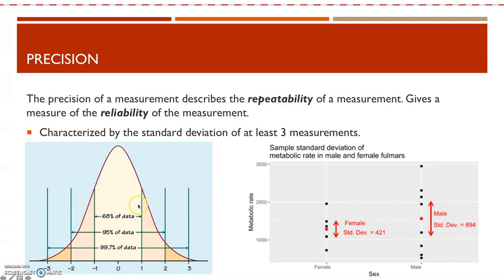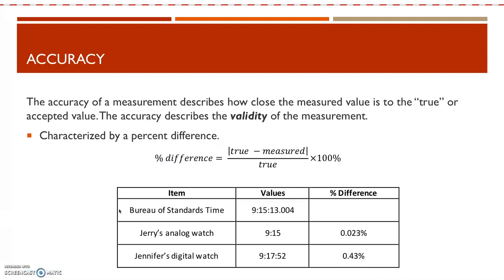The width of the standard deviation tells you about the overall spread in the data points. If you have more spread in your data, you are less reliable and less repeatable, and you'll have a larger standard deviation. If you are very repeatable, you'll have more measurements closer to the average, the distribution becomes more narrow, and your standard deviation gets smaller. Standard deviation is a great way to characterize the reliability or precision of your measurements.